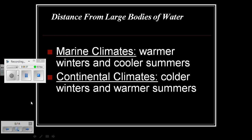The distance from large bodies of water can directly affect the climate nearby. Marine-based climates usually have warmer winters and cooler summers. Moving further inland, you find continental climates, and they usually have colder winters and warmer summers.